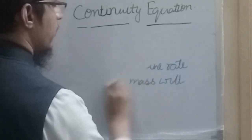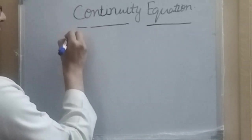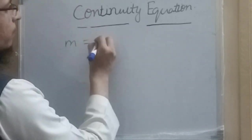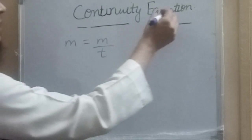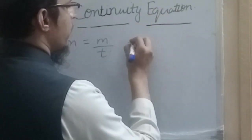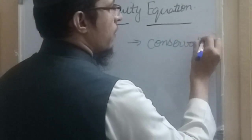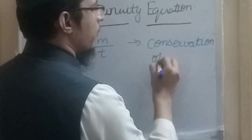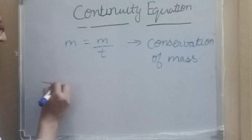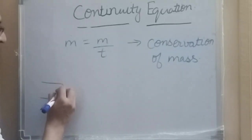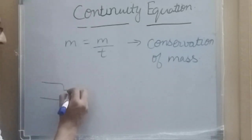The rate of flow of mass is the mass flowing per unit time, represented by m-dot. This continuity equation is based on the principle of conservation of mass. Suppose we have a pipe in which the diameter is changing.